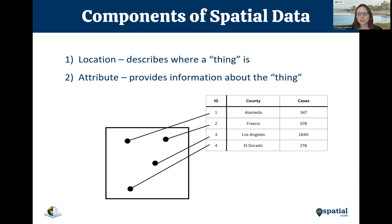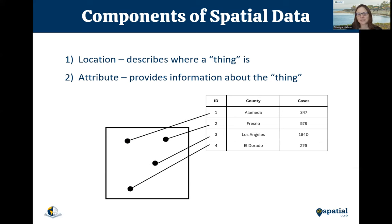The components of spatial data — whether it's a point, a line, or an area — are always the same. You have a location, which means you have a GPS coordinate, an X axis and a Y axis. And if that's all you have, you have spatial data. But what is often used with spatial data is that there are attributes associated with it. So here you can see these are different counties; the points represent the center of the county, and the cases would be the number of COVID cases in each of those counties.